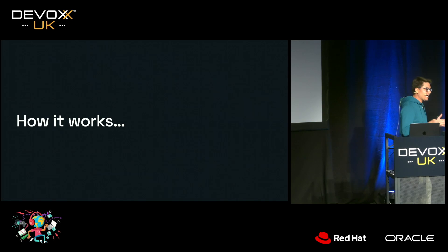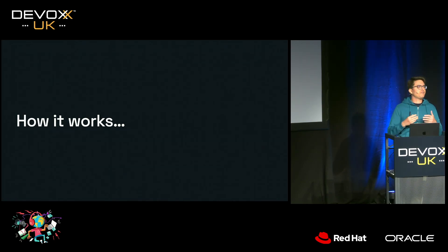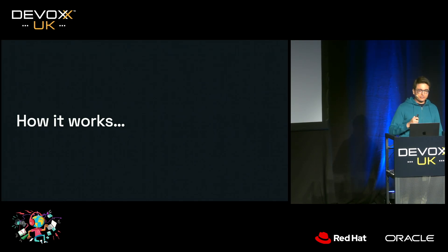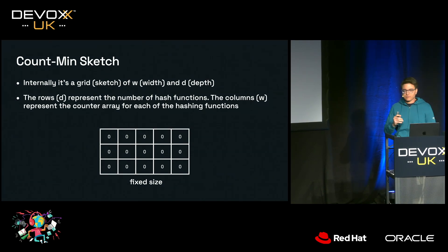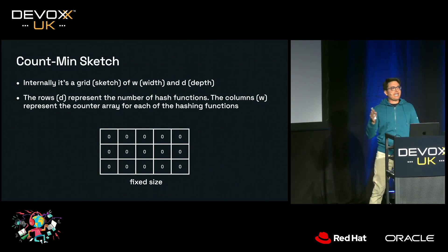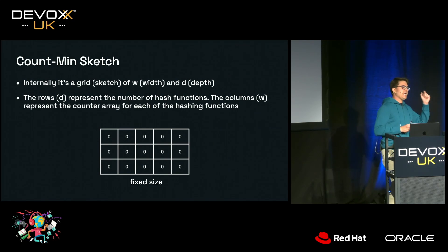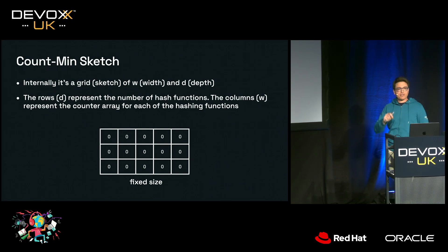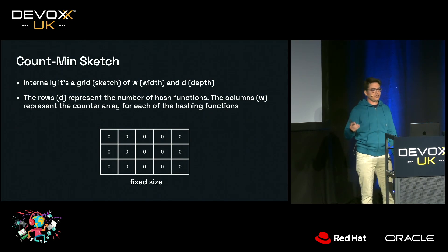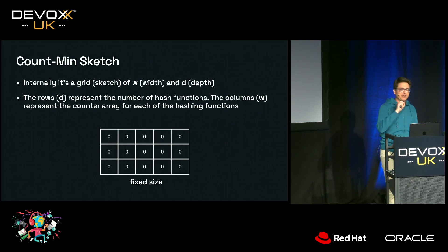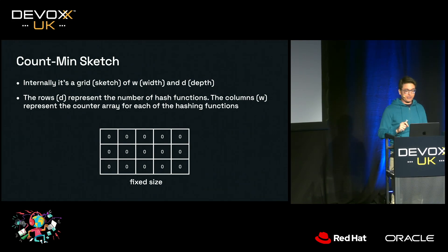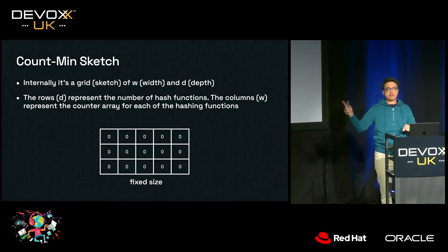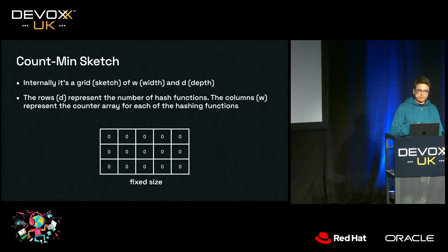How can it use a constant fixed size regardless of how many items you're counting? When you create a Count-Min Sketch and initialize it, you give it a number of columns and a number of rows. Internally, it creates a grid with the width and depth you provide. In this case, we're creating one with a grid of 5 by 3, which is always going to be 5 by 3 — it's not going to increase over time. It's fixed size.